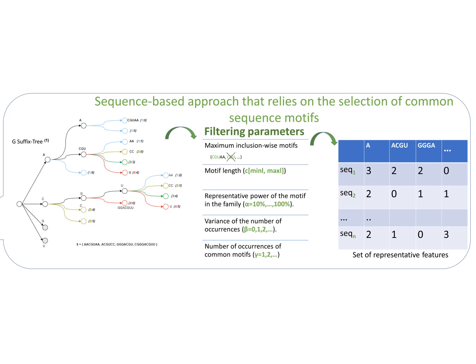For example, if the variance is 1, that means we tolerate 1 difference between the number of occurrences. The last filtering parameter is the number of occurrences, which can be 1 or more.